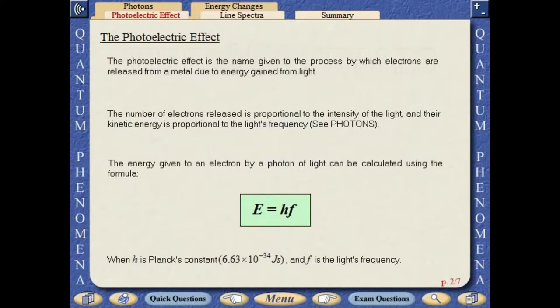The photoelectric effect is the name given to the process by which electrons are released from a metal due to energy gained from light. The number of electrons released is proportional to the intensity of the light, and their kinetic energy is proportional to the light's frequency.